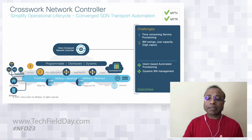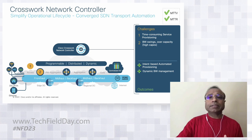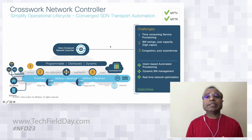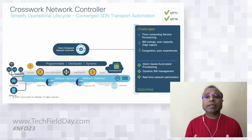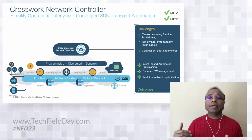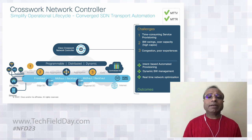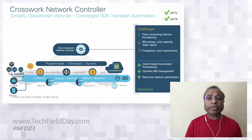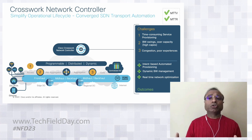The third challenge is when congestion actually happens, because it results in deteriorating the end-user experience. What the controller helps with is real-time optimization — what we call closed-loop optimization — where it's monitoring key metrics in the network. When it detects congestion points, device failure, or link failure, it redirects traffic or takes actions to mitigate the risk of congestion.